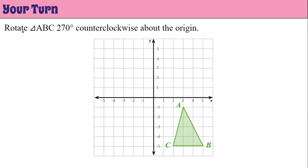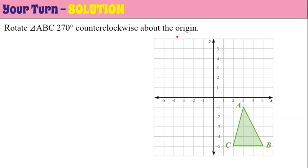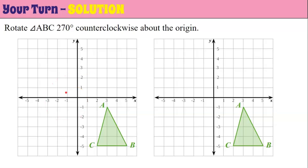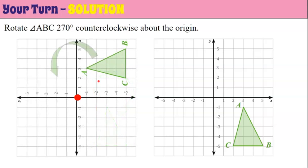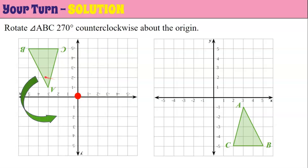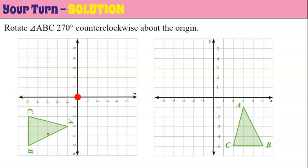One more for you — rotate triangle ABC 270 degrees counterclockwise about the origin. Go ahead and pause, and come back when you're ready. Welcome back. We have our original graphed triangle. We're going to go left because we're going counterclockwise, and our angle of rotation is 270 degrees — that's three turns to the left. First turn lands us in the first quadrant, second turn in the second quadrant, and a third turn in the third quadrant. Here's where our triangle needs to be graphed.